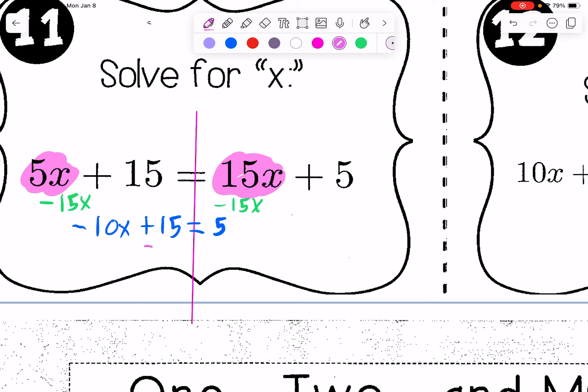Our next step is to subtract 15 from both sides. We're left with negative 10x equals negative 10. The last step, like always, is to divide by the thing x is multiplied by. So we are left with x equals negative 10 divided by negative 10 is 1. We just have one more problem left now.